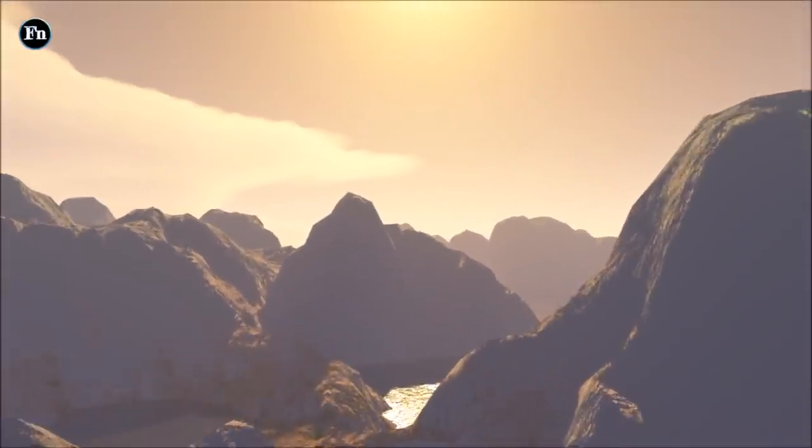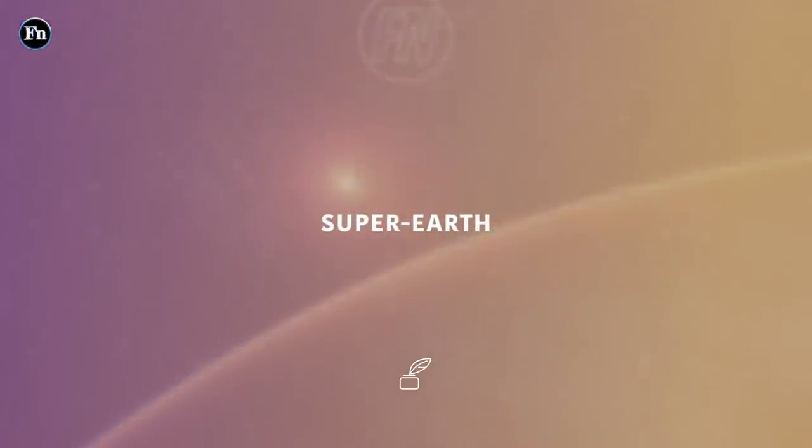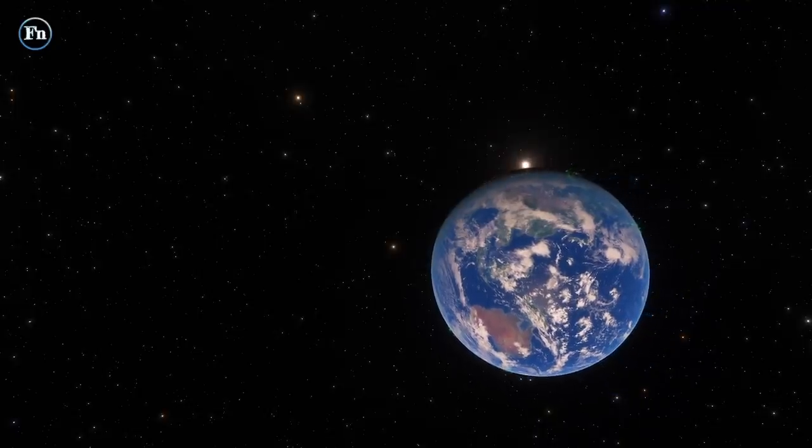Found in 2017 by the MEarth Project, LHS 1140b is approximately seven times the mass of Earth and up to 60% larger in radius, placing it within the super-Earth category of planets. It is one of the densest planets discovered, with a density more than twice that of Earth, together with a high surface gravity of about 2.41 Earths.